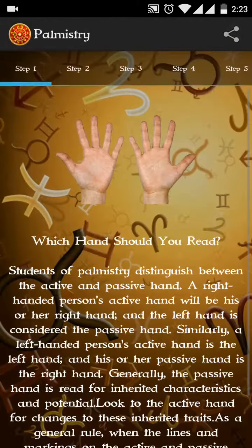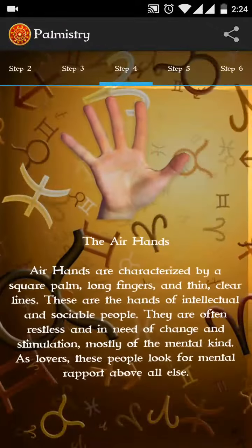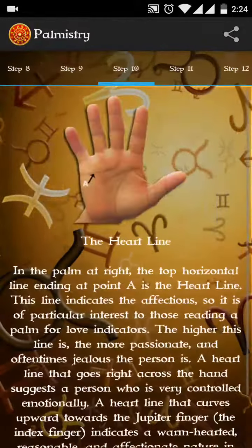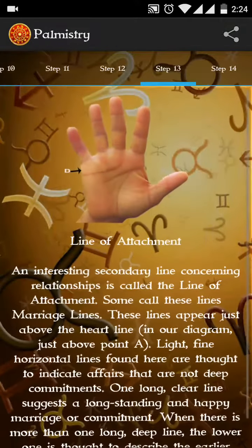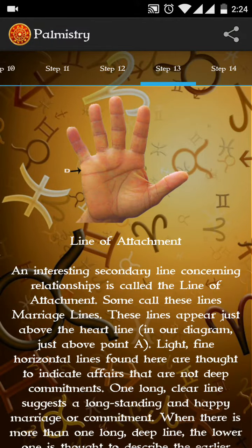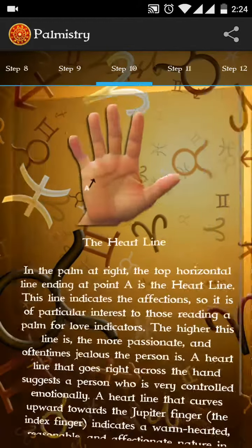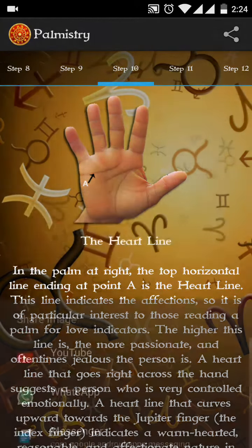Next feature is palm reading. This is not an in-depth palm reading — it covers the basics to give you an idea of how palm reading is done. There are many steps; if you swipe left and right, you can navigate through them. There are a total of 14 steps. Read each and every step and just go through it — it will help you understand how palm reading is done. This can also be shared using the share button on top.